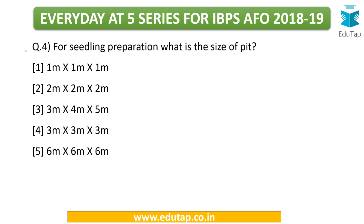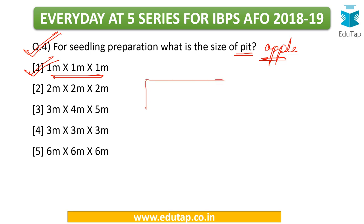The fourth question: for seedling preparation, what is the size of the pit in the case of apple? The answer is 1 meter × 1 meter × 1 meter. You need to dig and form a base on which the seedling can be planted, and the size of the pit is important — the depth matters. This is the particular depth required in the case of apple.